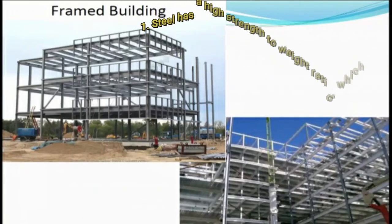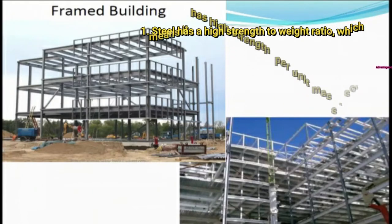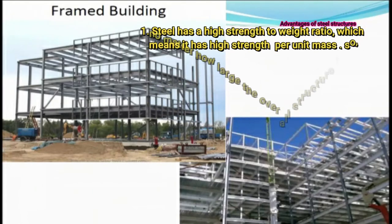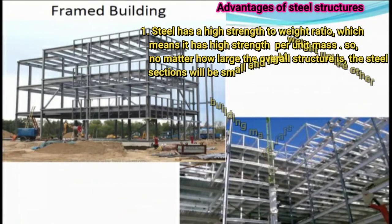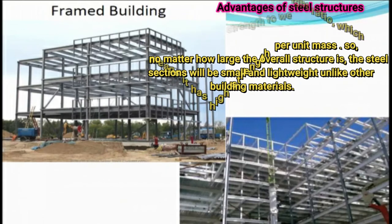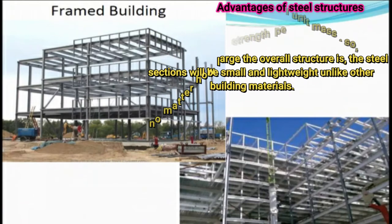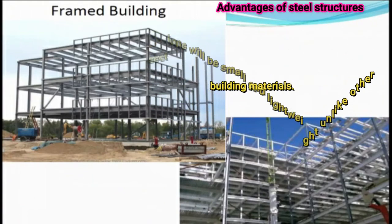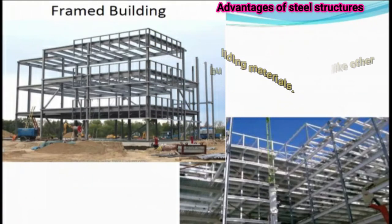Now let us go to the advantages of steel structure. The first point is steel has a high strength to weight ratio, which means it has high strength per unit mass. So no matter how large the overall structure is, the steel sections will be small and lightweight, unlike other building materials.